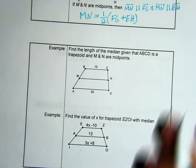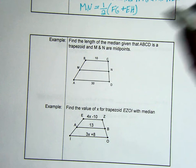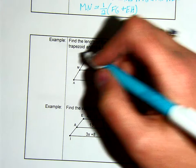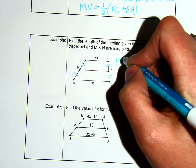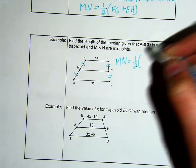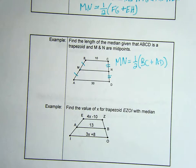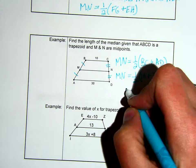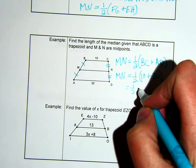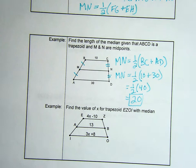So for some examples with these. Find the length of the median given that ABCD is a trapezoid and M and N are midpoints. So with this being a trapezoid, these guys M and N being midpoints, I can say MN is one-half, and the two bases are BC and AD. So now I just need to plug in numbers. So MN is one-half, 10 plus 30. So one-half, 10 plus 30 is 40. Half of 40 is 20. So the length of MN is 20 units.